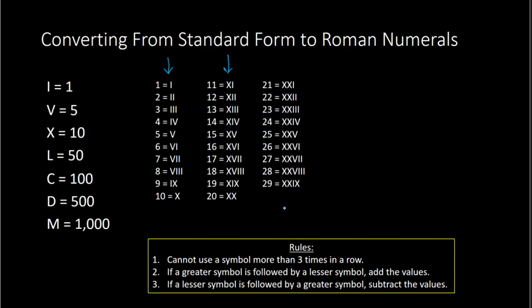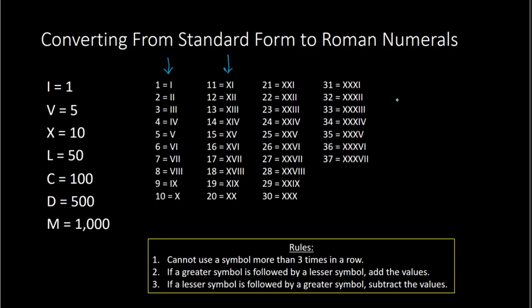Once we get to thirty, that would be three tens — so three X's for thirty. We repeat again for thirty-one through thirty-nine by putting three X's in the front and then the corresponding ones column after. So three X's then I for thirty-one, all the way through thirty-nine. For forty, that would be four X's — but we cannot use a symbol more than three times in a row, so I look at L because L is fifty. If I put an X in front of the L, that's ten subtracted from fifty: XL equals forty.